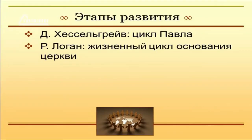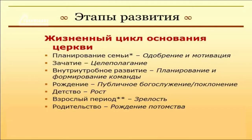Еще один подход к основанию церквей был предложен Робертом Логаном. Называется он «Жизненный цикл основания церкви». В своем адаптированном и несколько видоизмененном варианте он использовался многими авторами, занимающимися вопросом основания церквей. Логан опирается на понятие жизненного цикла в биологии. Если Хэссельгрейв помещает фокус внимания на деятельность миссионера, то Логан смотрит скорее на развитие самой общины, то есть непосредственно на церковь.